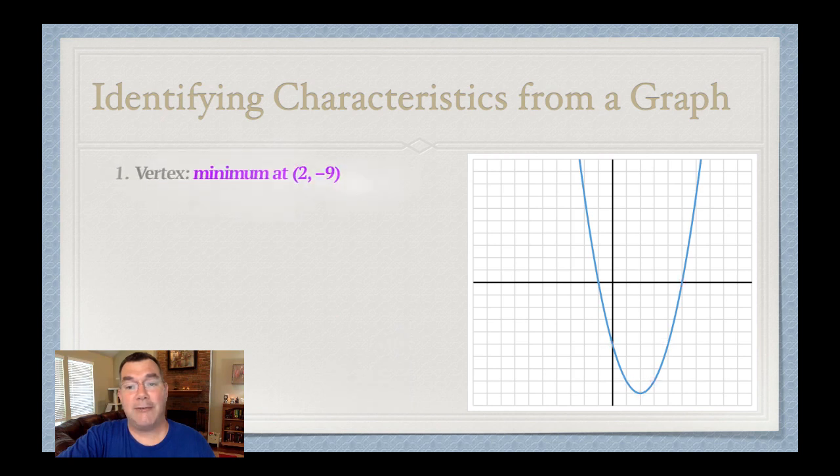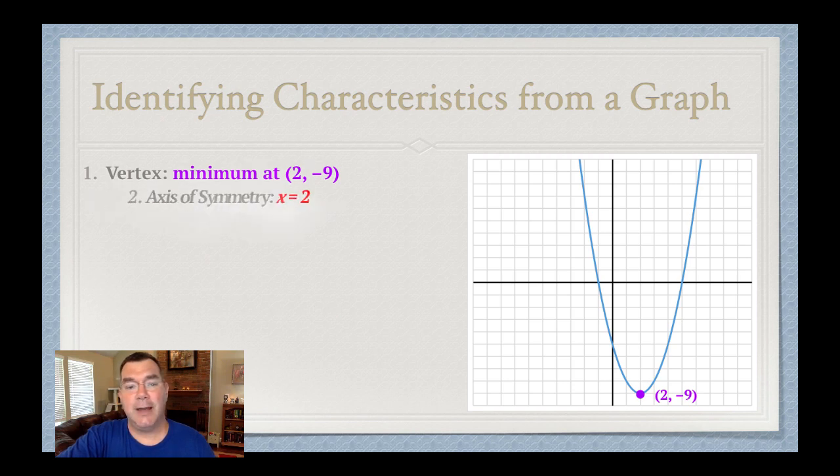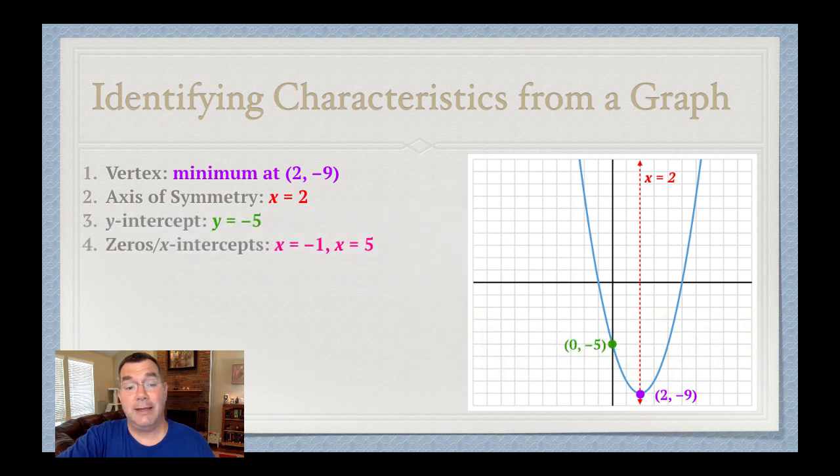Once I've got it graphed, I can identify those characteristics. The vertex is at the bottom of the parabola. That means it's a minimum at 2 and negative 9. That means that the axis of symmetry has the same x coordinate as the vertex. So that's x equals 2. The y-intercept is going to be at negative 5. The x-intercepts are going to be at negative 1 and 5 on the x-axis.